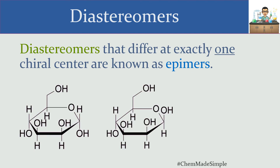Let's take a look at an example using mannose, which is a saccharide. Looking at these two molecules, this chiral center here has four different substituents. Contrasting it with this chiral center over here, they're not the same — the hydroxyl group on one is pointing upwards, whereas the hydroxyl group on the other is pointing downwards. But all the other chiral centers on this molecule — this carbon, this carbon, this carbon, this carbon — are exactly the same. It's only that one chiral center that's a point of difference, which makes these two molecules epimers.